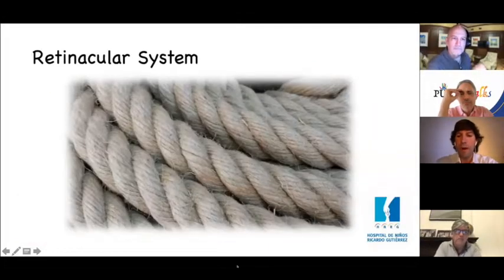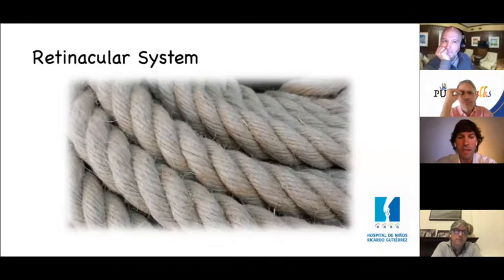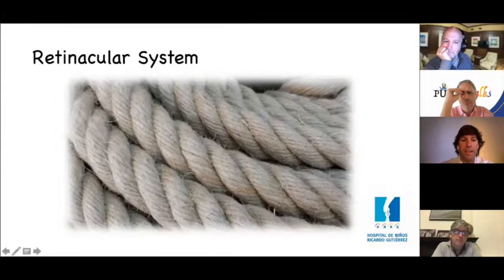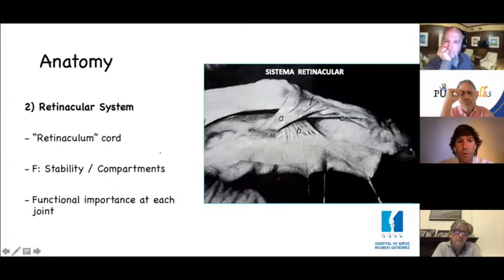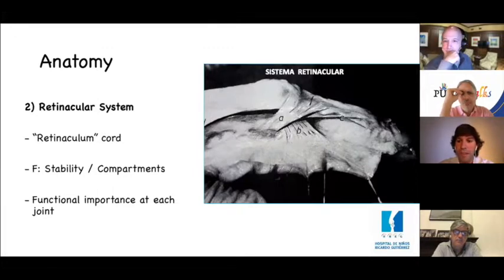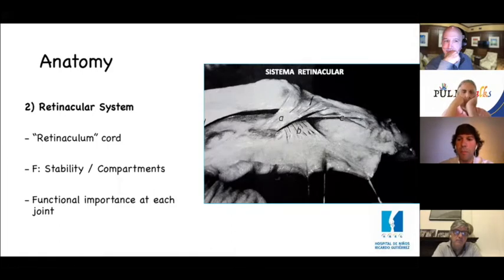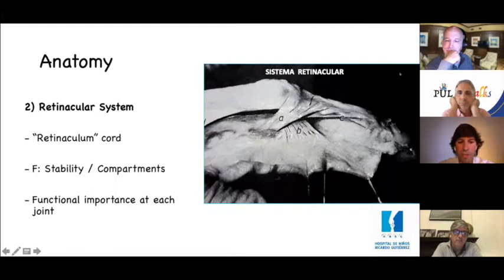The other part of the extensor mechanism is the retinacular system. Retinaculum comes from the word cord, and these structures function for stability of the tendons and also divide compartments in the fingers and the hand. They have a special functional importance at each joint, as we will see.